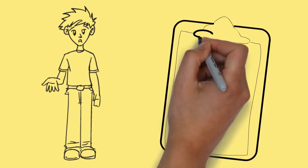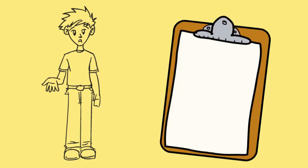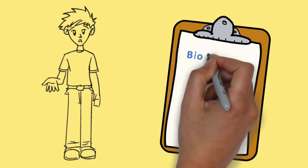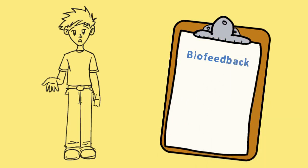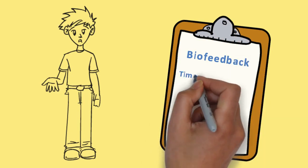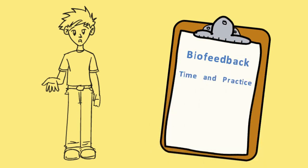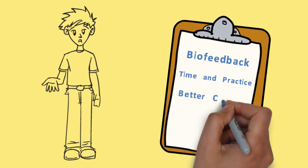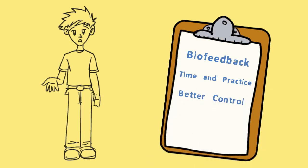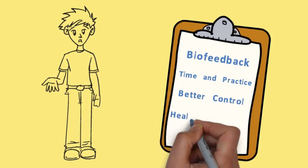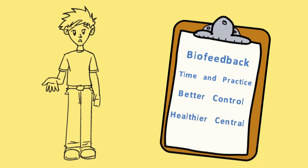But everybody can learn to change these things. It may take time and practice to learn to get really good at it. But as you gain control over that, you have greater control over your physiology and over your core, what we would call central nervous system functioning.